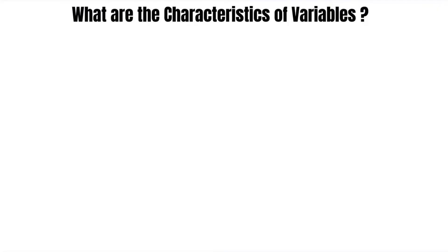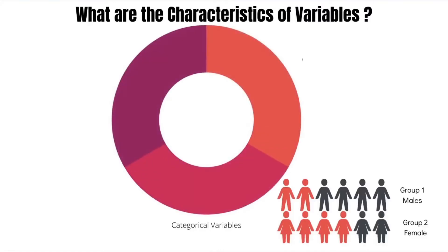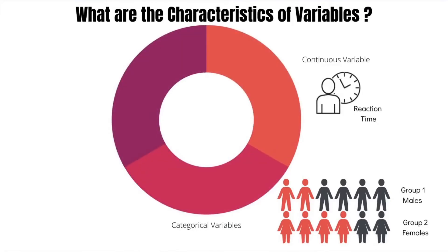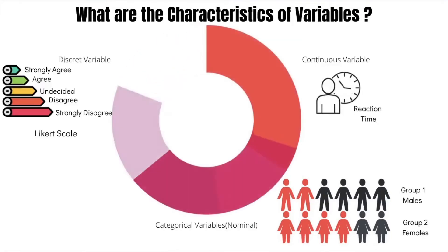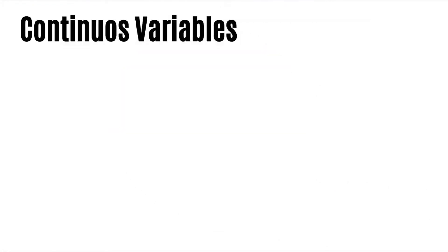What are the key characteristics of variables? Variables can be categorical in nature, they could be continuous in nature, or they could be discrete in nature. Let's look at each of these topics in a little more detail.